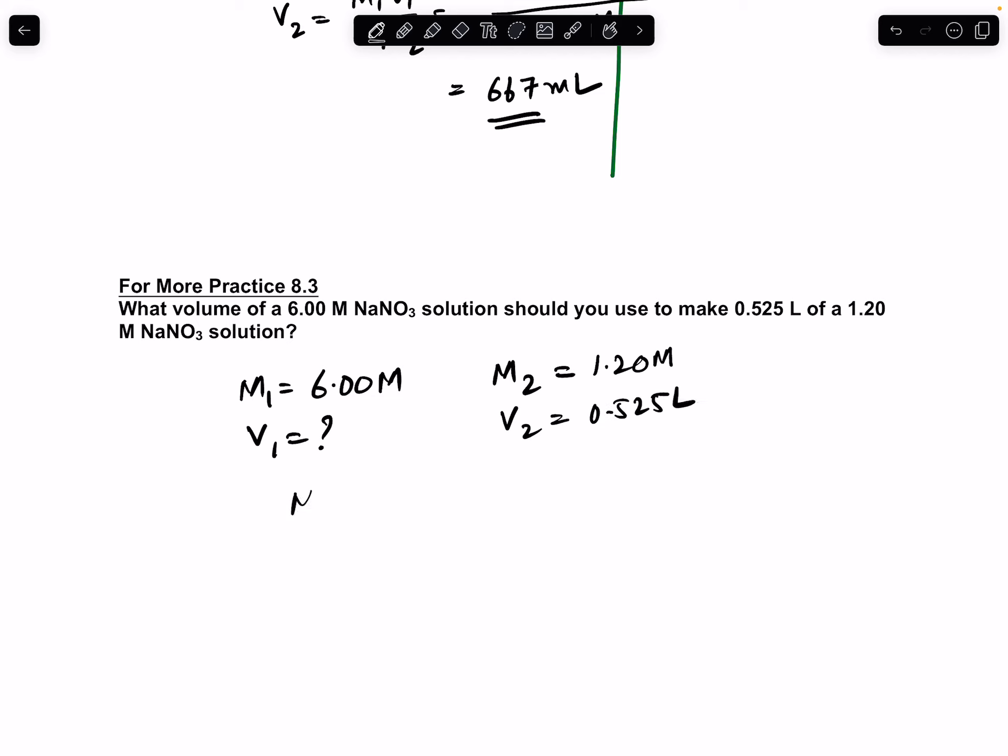Let's write down the relationship and rearrange to isolate V1. We get V1 equals M2V2 over M1. Now let's plug in the quantities: that's 1.20 molar times 0.525 liters over 6.00 molar.